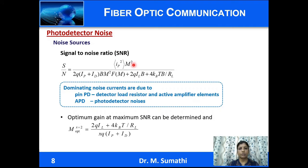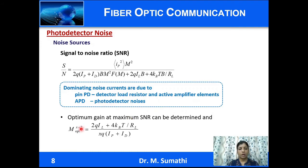The signal-to-noise ratio is given by the mean square signal current divided by the total noise current from all sources. It is observed that the dominating noise currents in the PIN photodiode are due to the detector load resistor and active amplifier elements, whereas for an APD the dominant noise current is due to photodetector noises. To obtain the optimum gain, the SNR expression is differentiated with respect to M and equated to zero, yielding an expression for the optimum value of M.